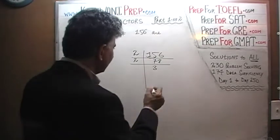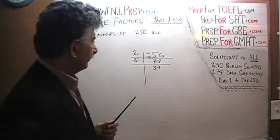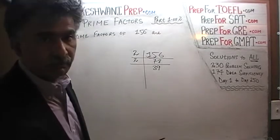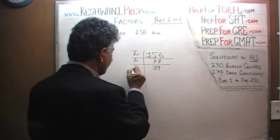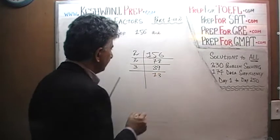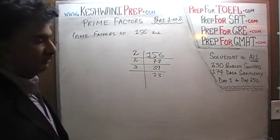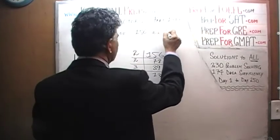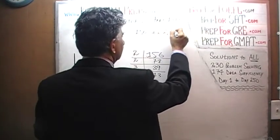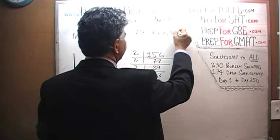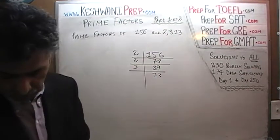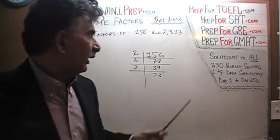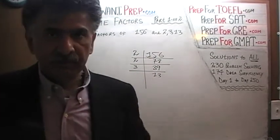We can no longer divide by 2 because 39 is an odd number, so we divide it by 3 and we get 13. The prime factors of 156 are 2, 3, and 13. Those are the only three prime numbers you can divide 156 evenly by. Of all the factors of 156, there happen to be only three prime numbers: 2, 3, and 13.